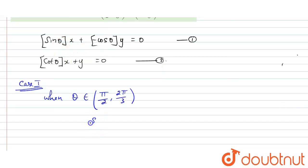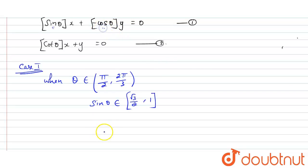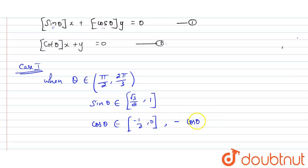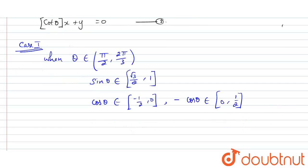For Case 1, I need to find sin θ. Sin θ belongs to (√3/2, 1), since sin(π/2) = 1 and sin(2π/3) = √3/2. Now finding -cos θ: cos θ belongs to (-1/2, 0), so -cos θ belongs to (0, 1/2), and ⌊-cos θ⌋ = 0.